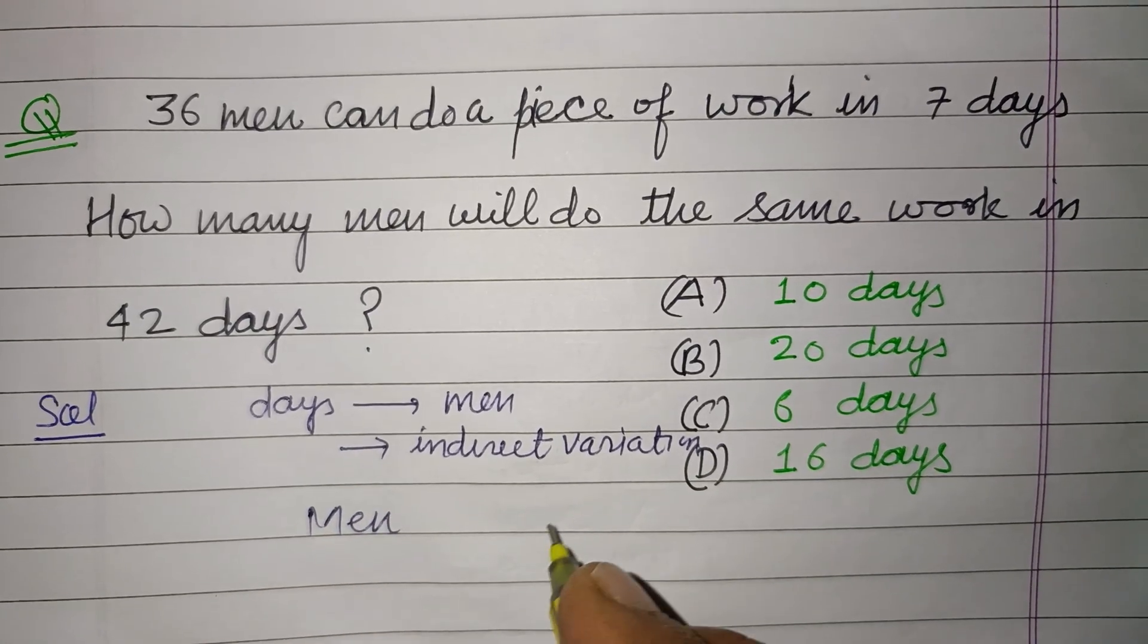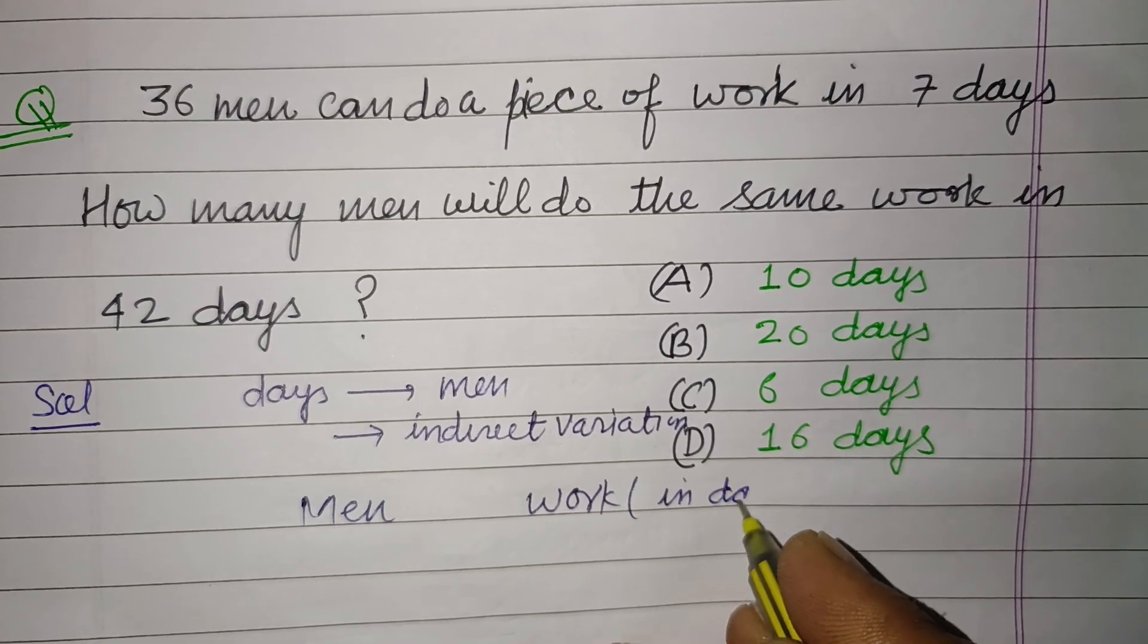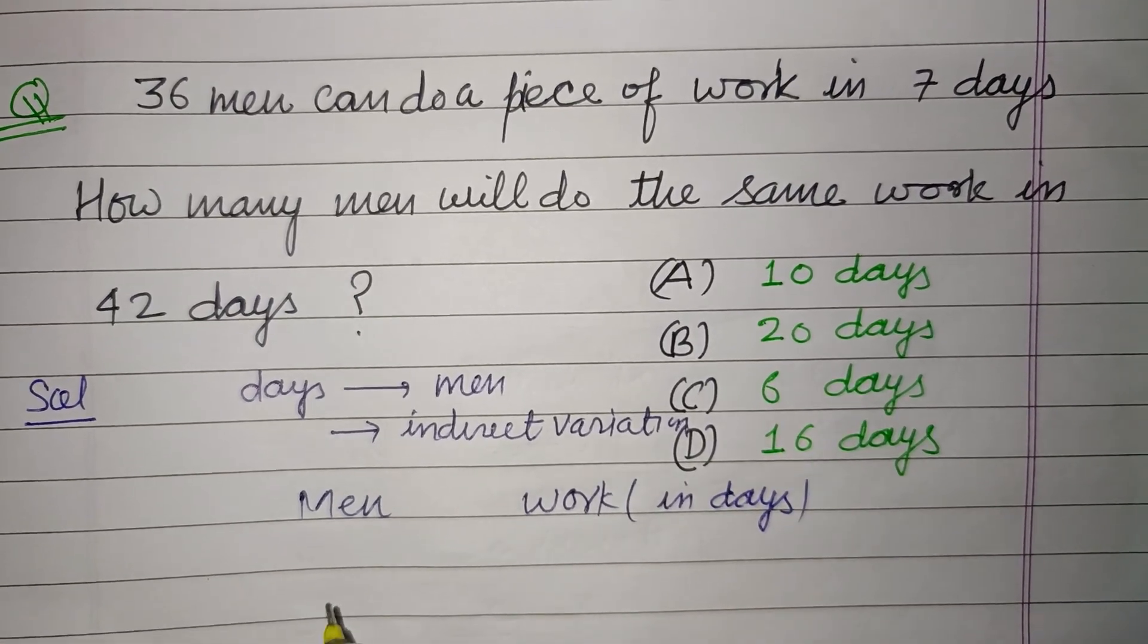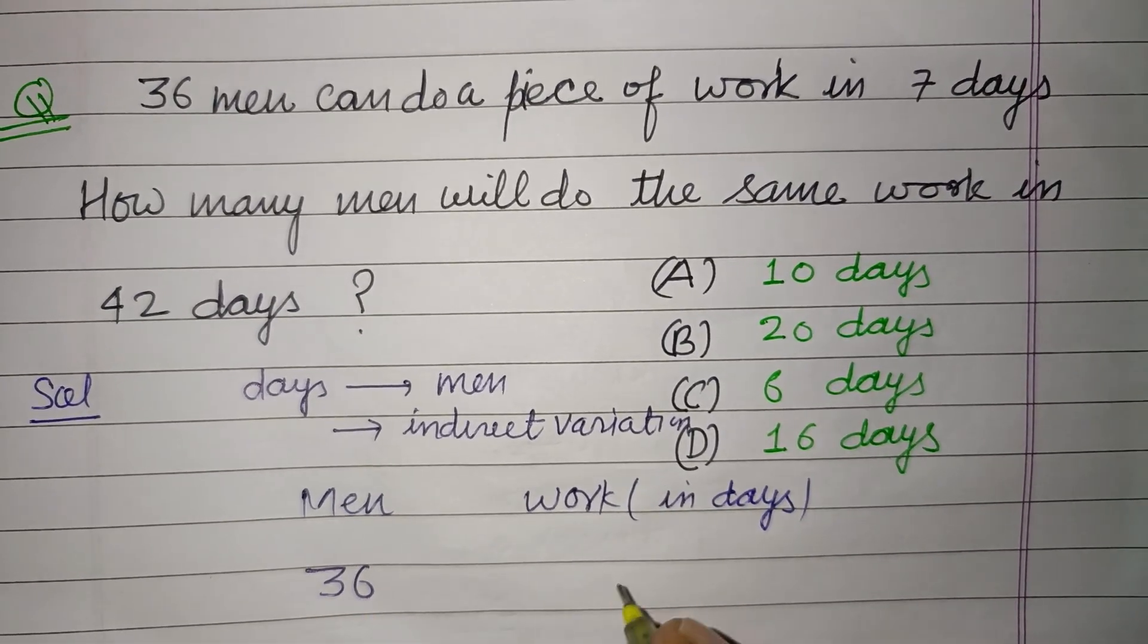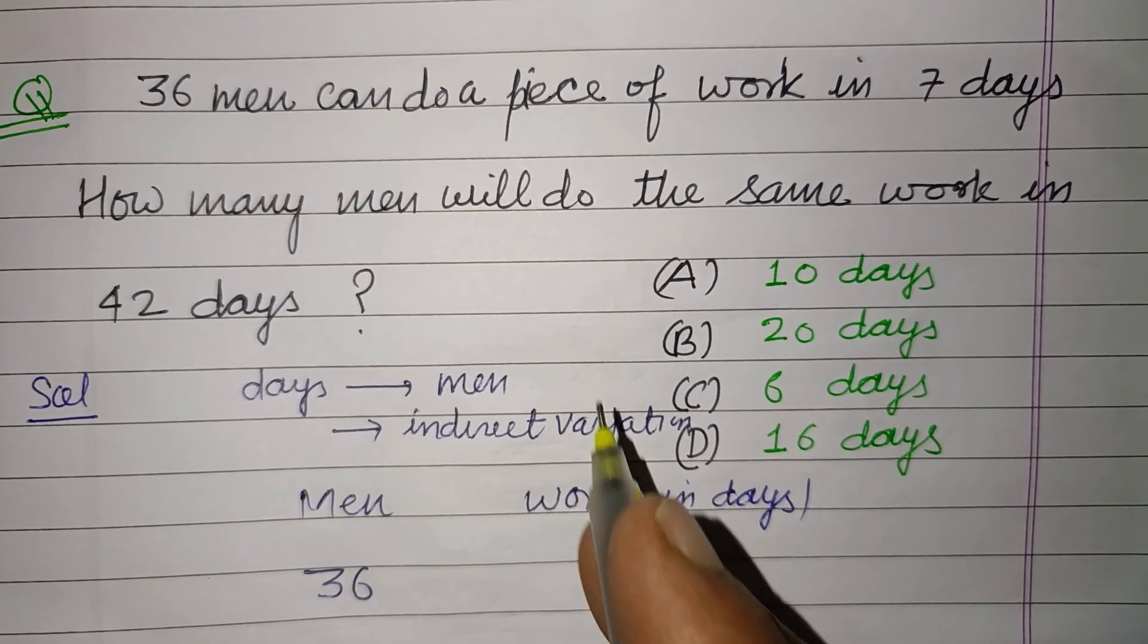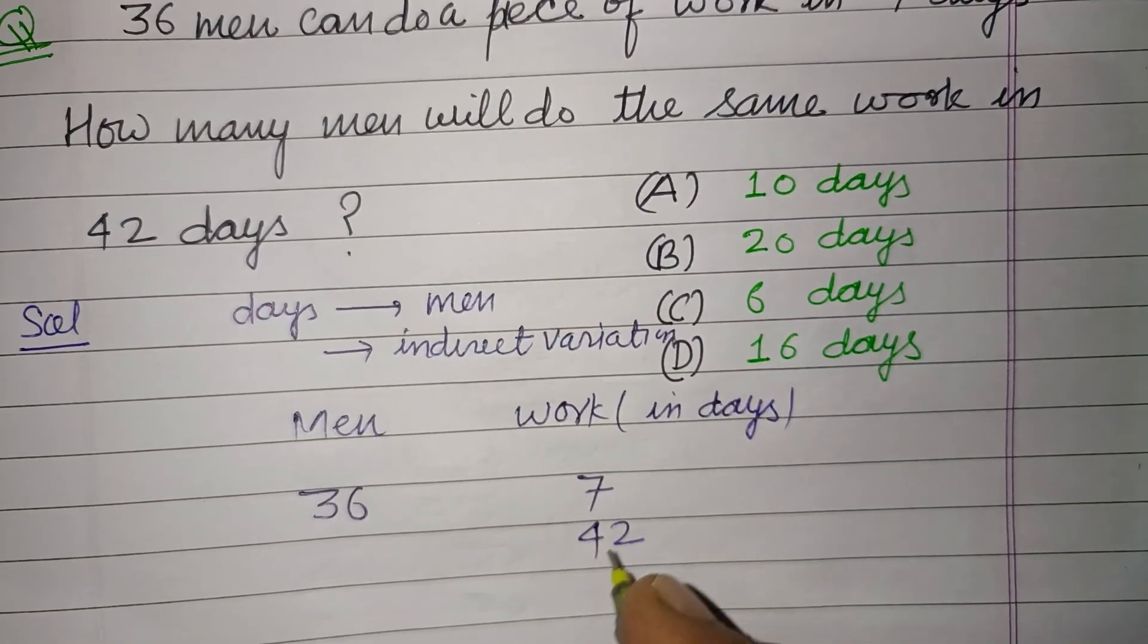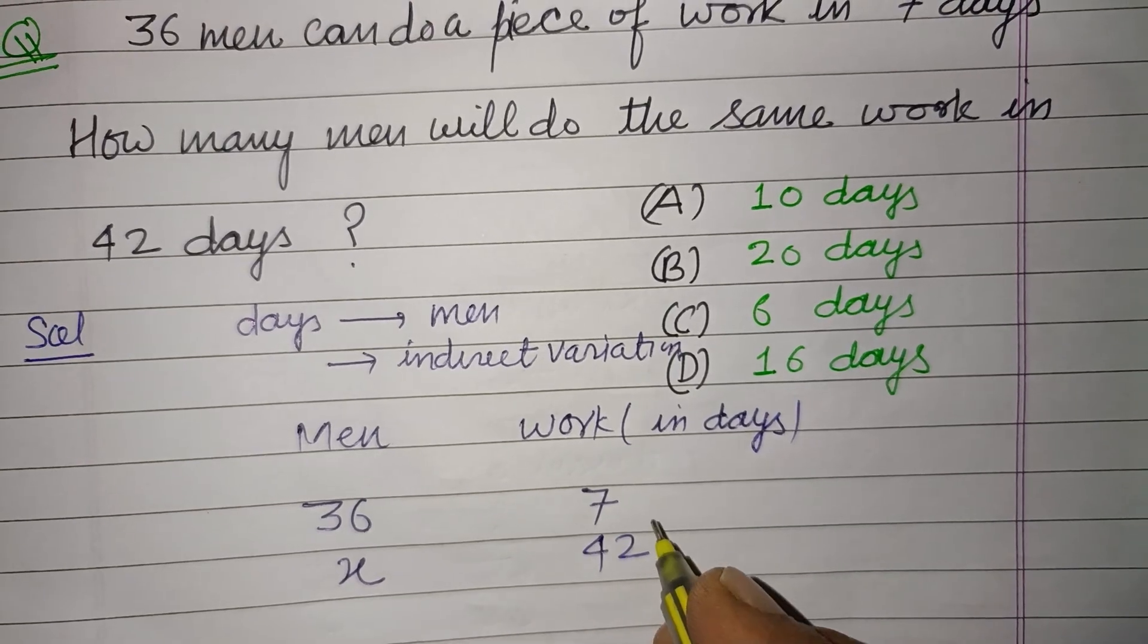36 men can do a piece of work in 7 days, then how many men will do the same work in 42 days? So this is 42 days and this is X. If the number of days is increasing, the number of men decreases.